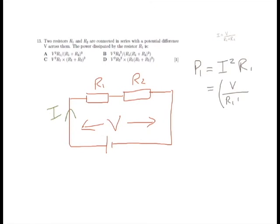And we can substitute in our value for I that we've worked out above. So we're left with V over R1 plus R2 all squared times R1, which we can then expand out of the brackets to be left with V squared R1 divided by R1 plus R2 all squared.